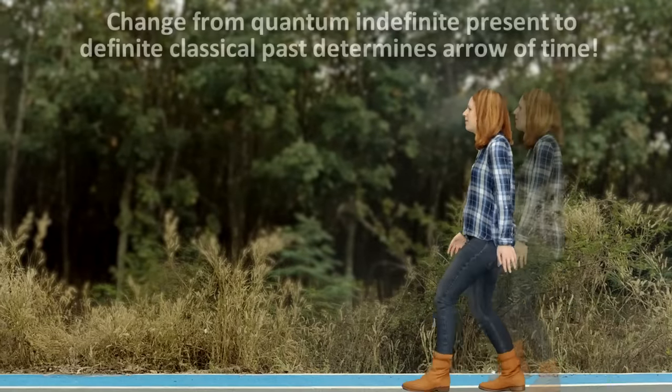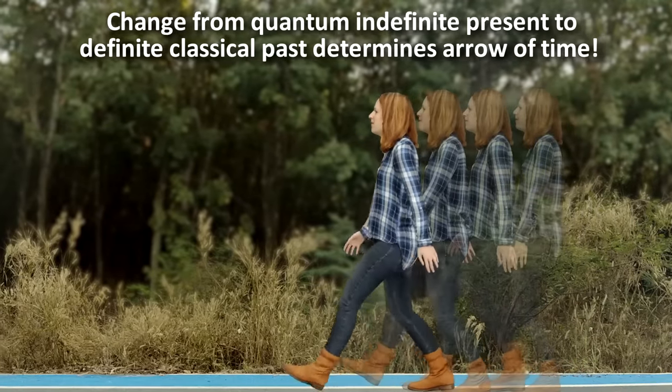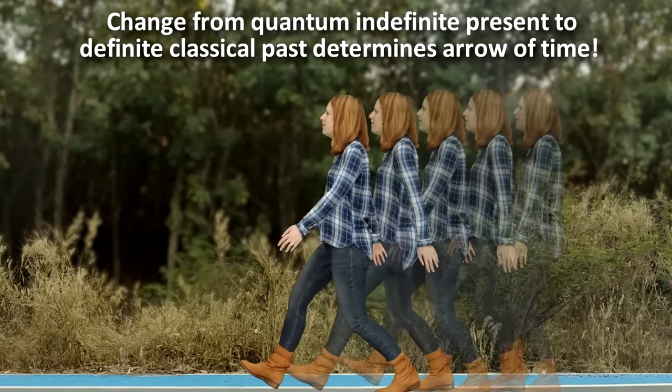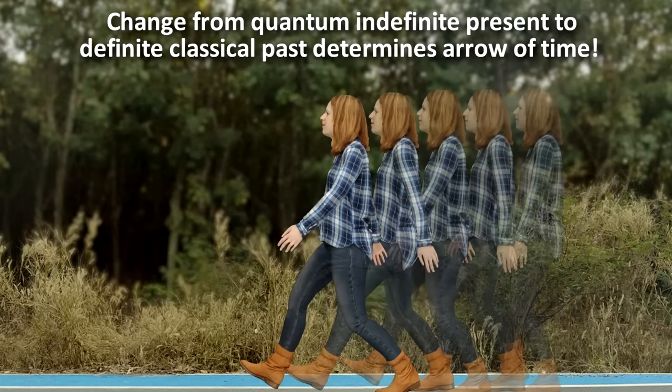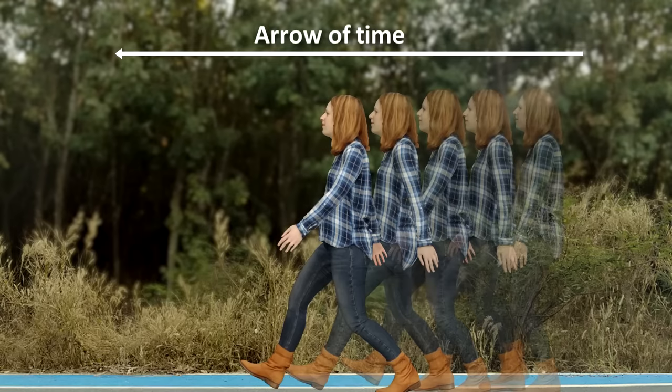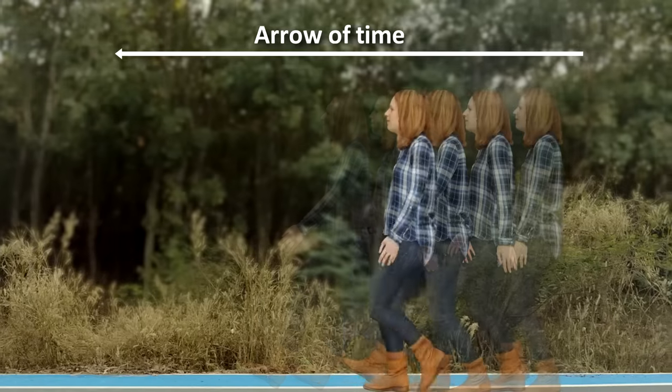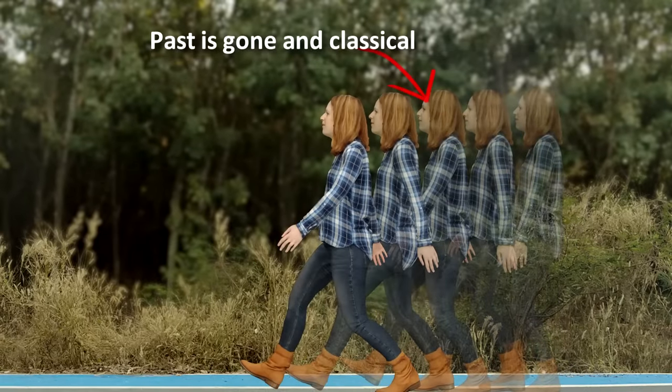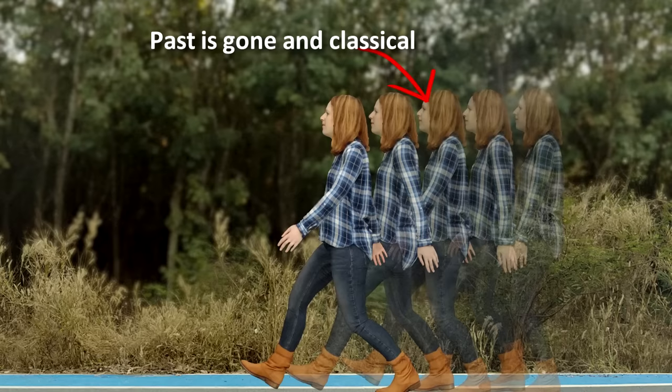Next, according to Smolin, it's the change from a quantum indefinite present to a classical definite past that defines the very arrow of time itself, pointing it always in the forward direction as the quantum present constantly churns out a classical past. We can never go back. We can't change the past. In fact, the past no longer really exists at all. Once something is definite, says Smolin, its job is done and it is gone.